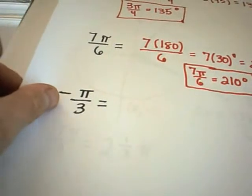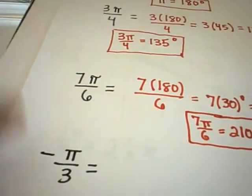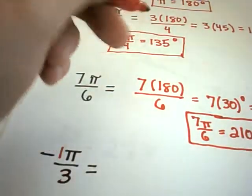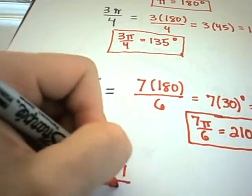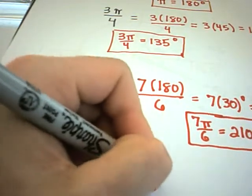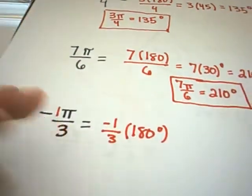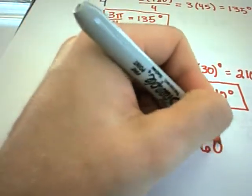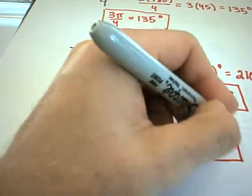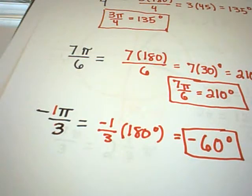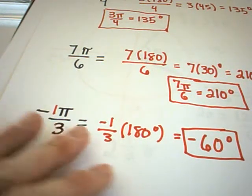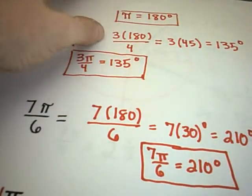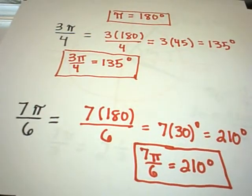Last but not least, negative pi over 3. Well, you're basically multiplying by negative 1 third. So if you multiply 180 by negative 1 third, 180 divided by 3, again, being 60, you'll get the angle of negative 60 degrees. So the same basic idea to convert from radians to degrees in this case. It all comes back to this basic formula of pi equals 180 degrees.